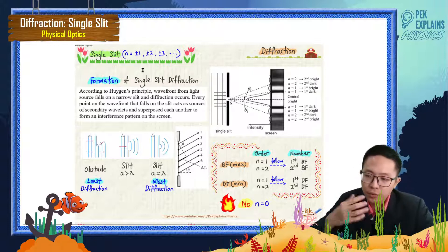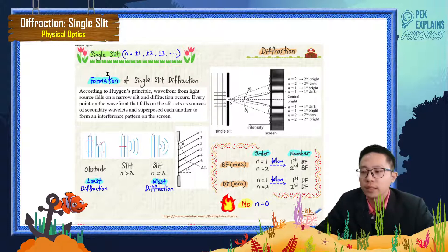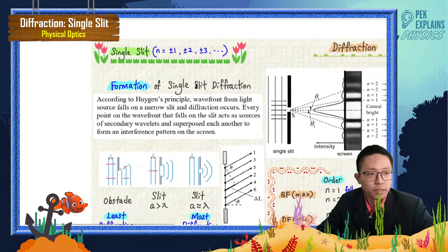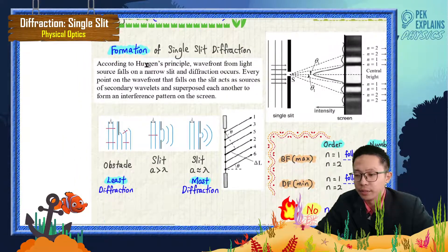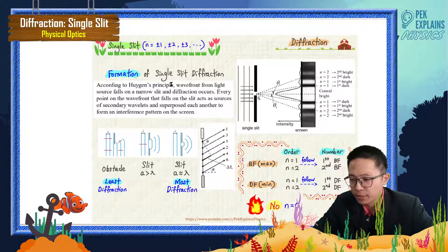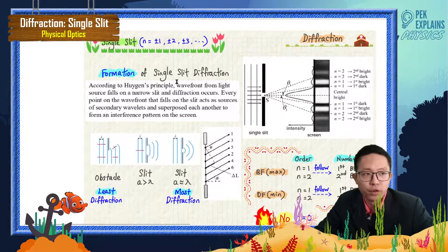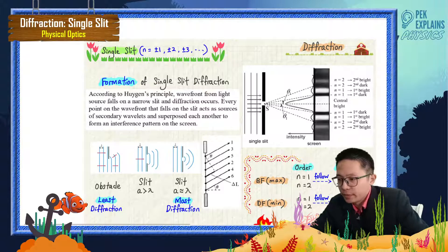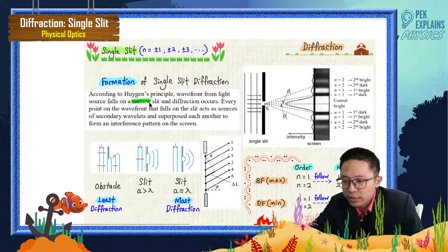How does the single slit diffraction form? What's the formation of single slit diffraction? Let us look at the notes here. According to Huygens' principle, the wavefront from a light source falls on a narrow slit, and then diffraction occurs.